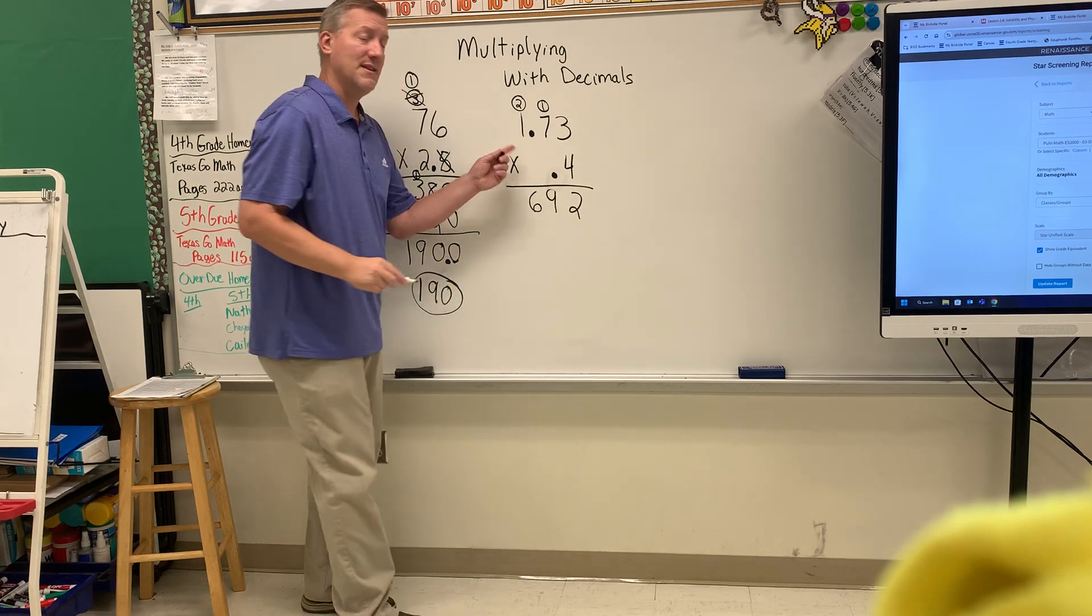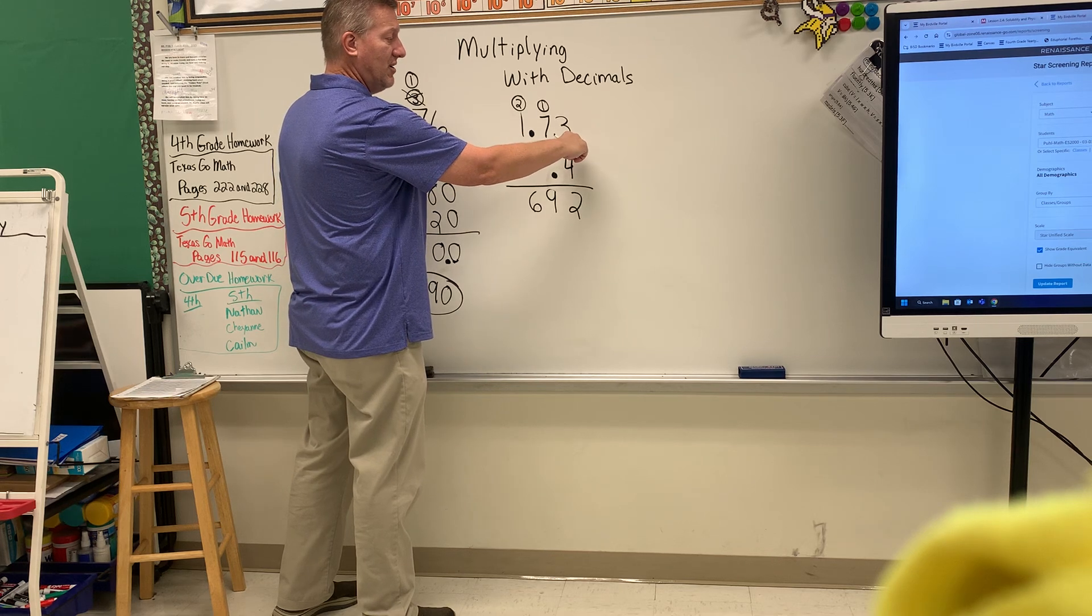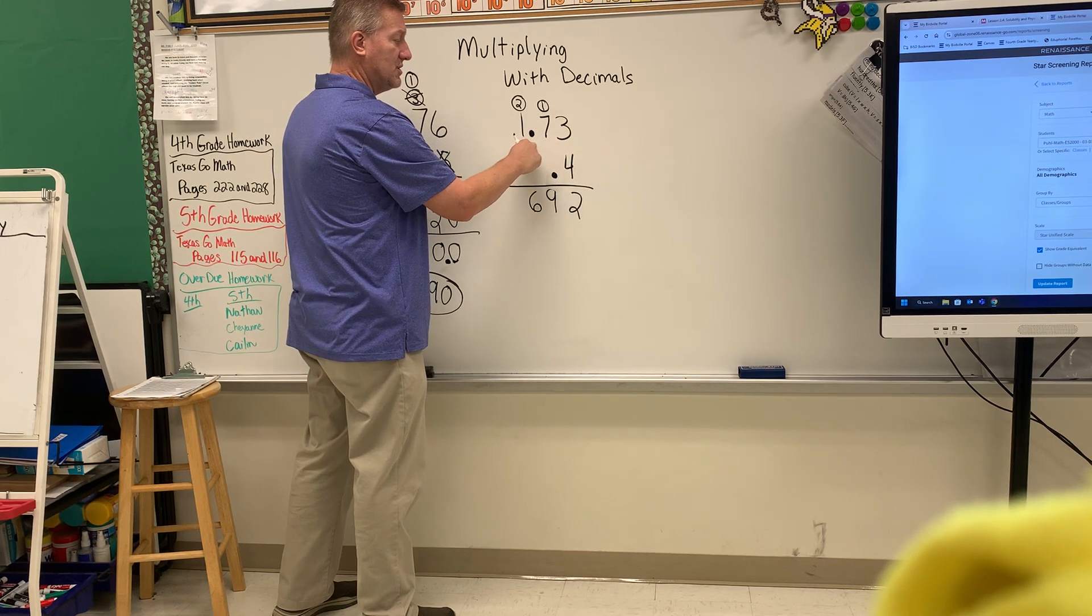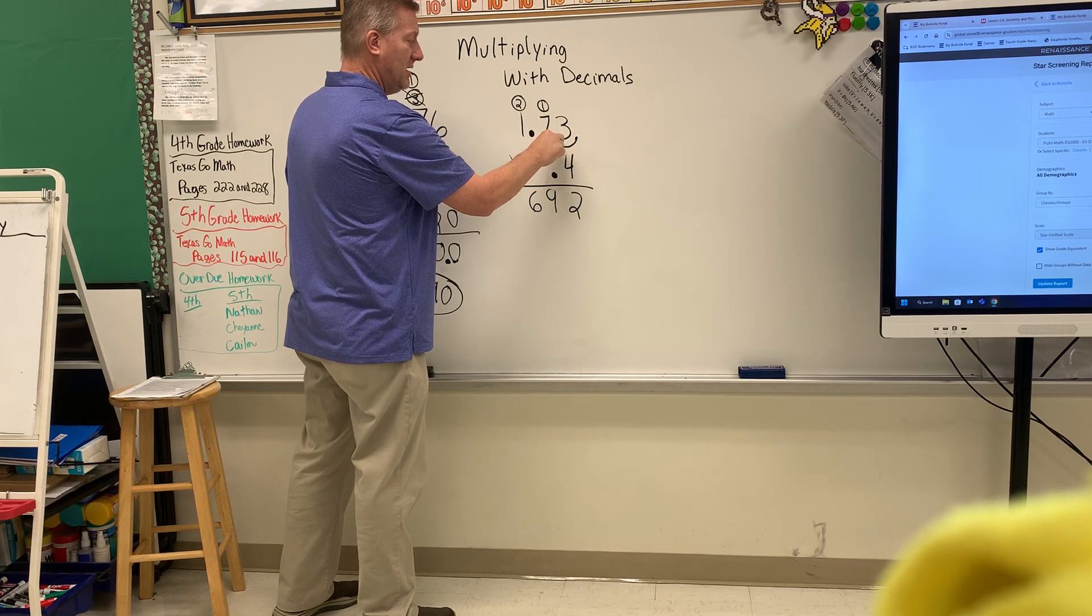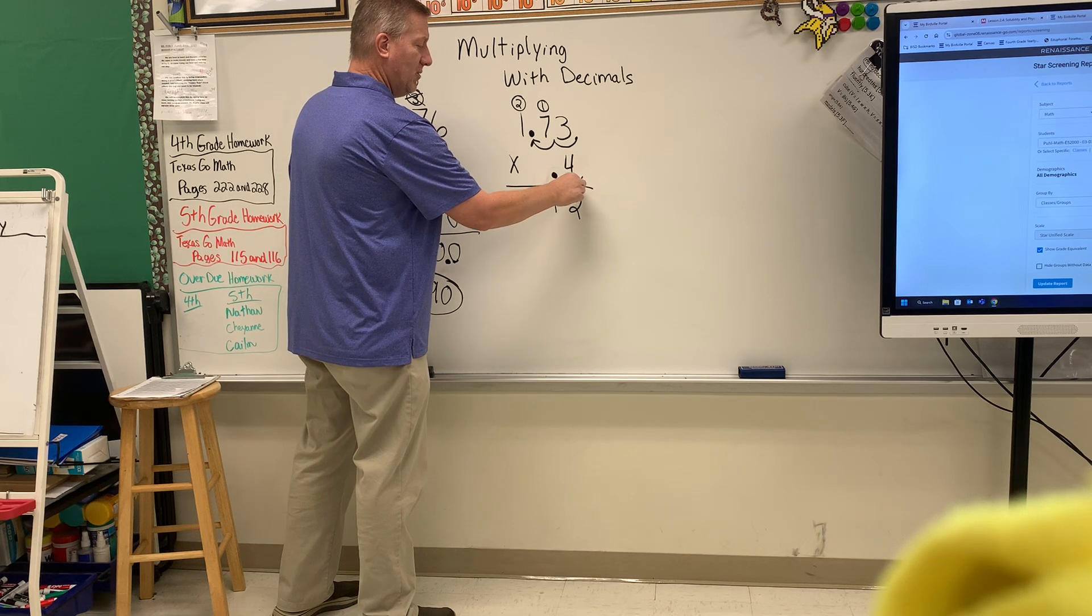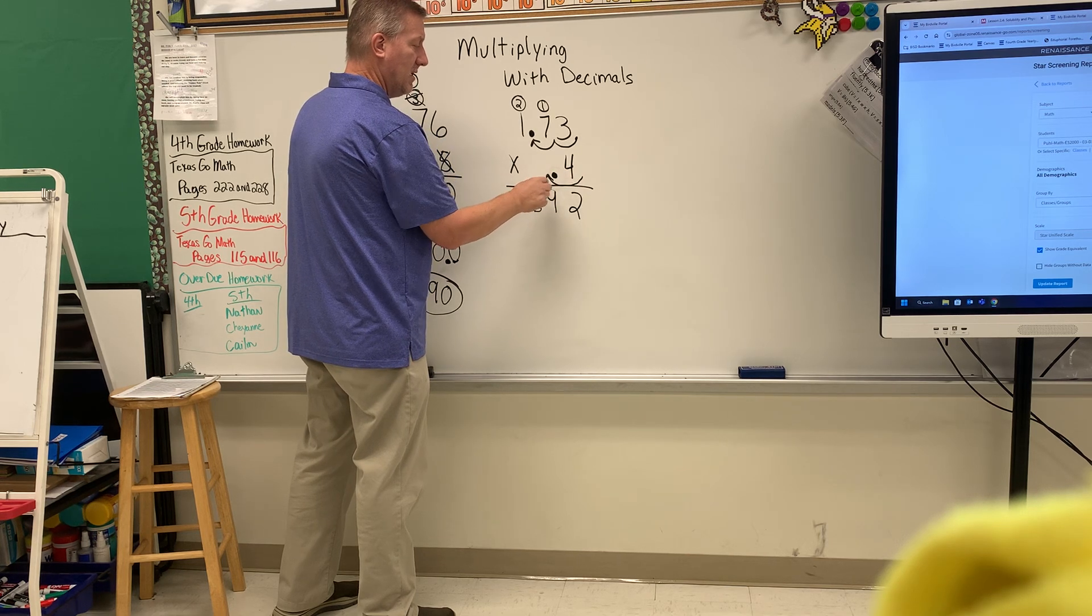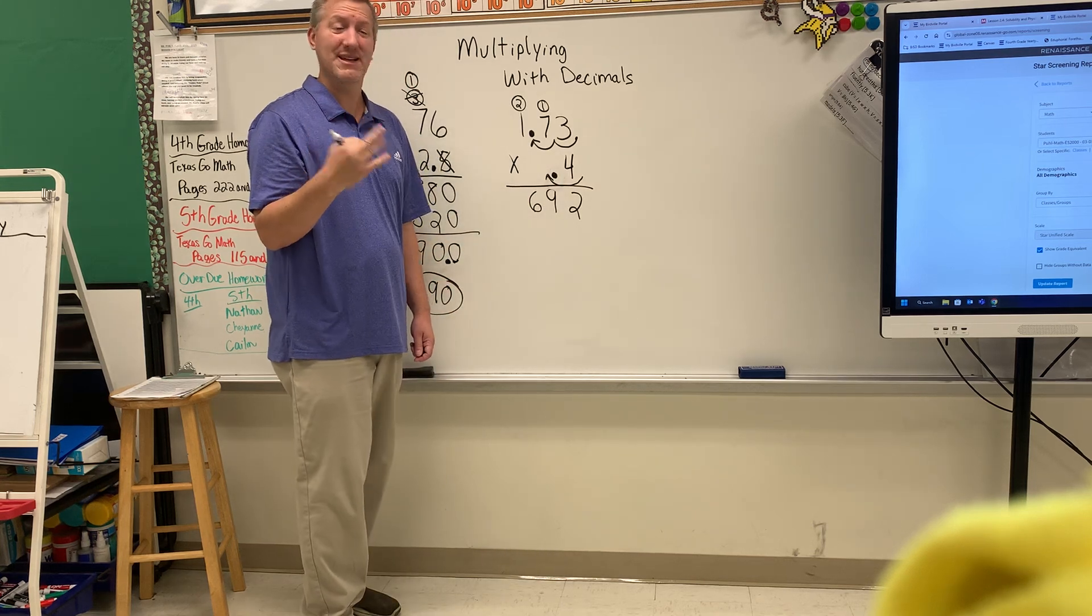Now this is where we have to look at the decimal. So if we start from the right hand side here we go 1, 2 places. So 1, 2 places here. And here we go 1. So 1, 2 plus another 1 is 3 places.